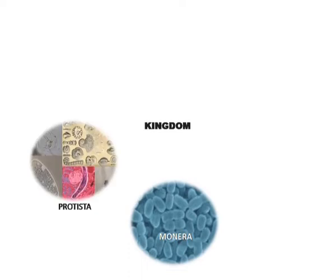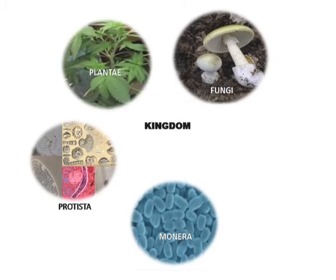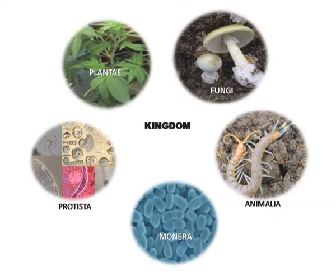Dear learners, welcome to the National Institute of Open Schooling. Today I am going to talk about Kingdom Monera. Let us recall that it was Whittaker in 1969 who classified various organisms into five kingdoms: Kingdom Monera, Kingdom Protoctista or Protista, Kingdom Fungi, Kingdom Plantae, and Kingdom Animalia. He did this because there are diversified organisms on this planet, and in order to differentiate each one, he grouped them based on their similarities and differences.